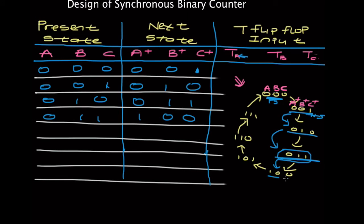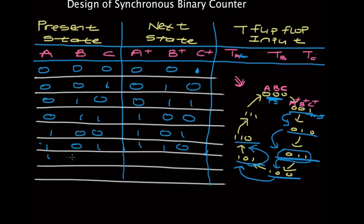Continuing: if the present state is 1, 0, 0, your next state is 1, 0, 1. Present state 1, 0, 1, next state is 1, 1, 0. Present state 1, 1, 0, next state is 1, 1, 1. Present state 1, 1, 1, next state is 0, 0, 0. And we see we are back to 0, 0, 0 — so that's why we stop.